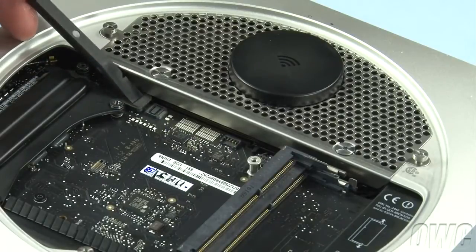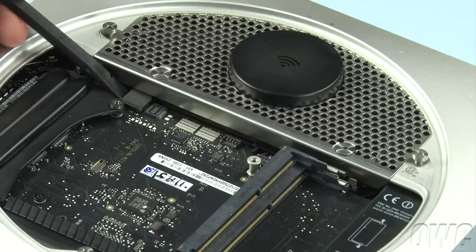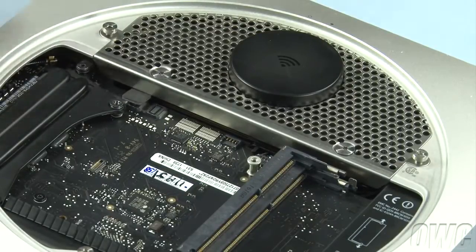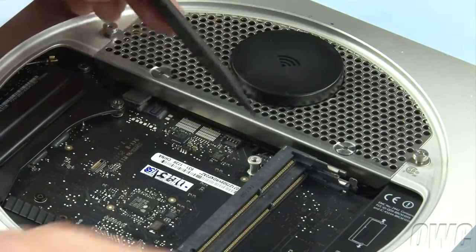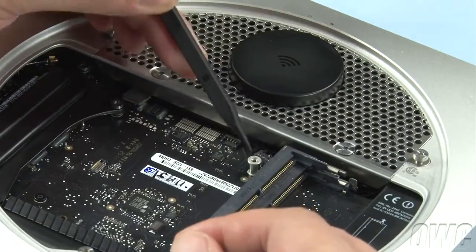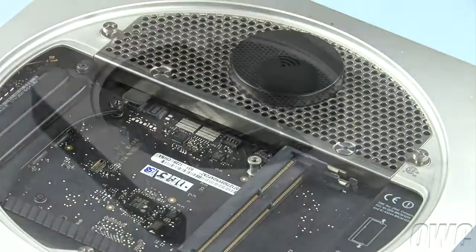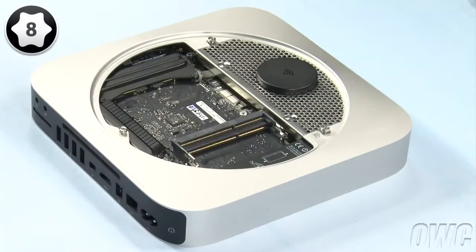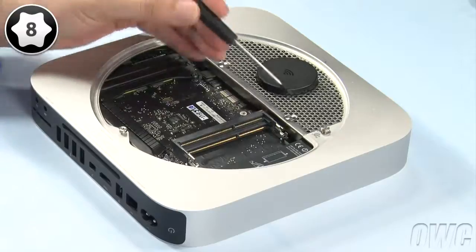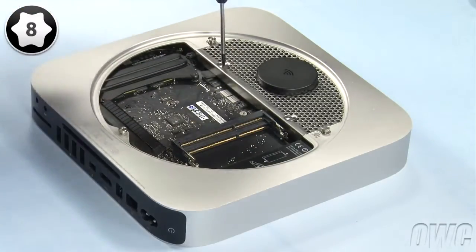Next, use your nylon pry tool to gently detach both the SATA connector and the IR board connector. Once you've done that, you can use your Torx T8 screwdriver to remove these two screws holding the hard drive to the airport antenna grate.